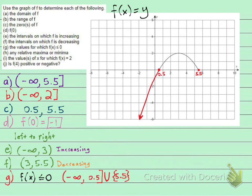So this says that your f of x is less than or equal to 0 everywhere from negative infinity to 0.5. And then also again at 5.5.